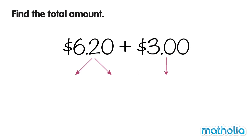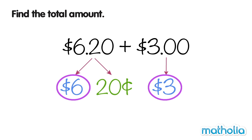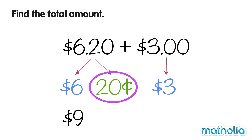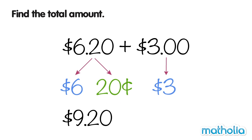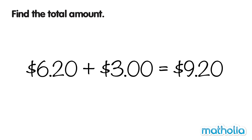Let's separate the amounts into dollars and cents. First, add the dollars. $6 plus $3 equals $9. Now add the cents to the dollars. $9 add 20 cents is $9.20. So $6.20 plus $3 equals $9.20.